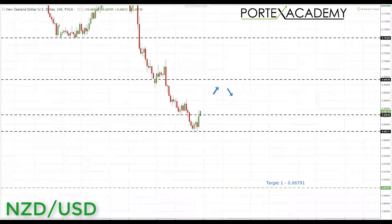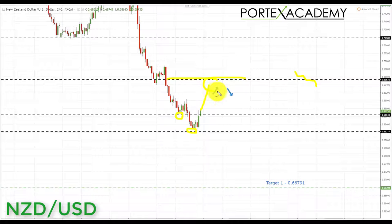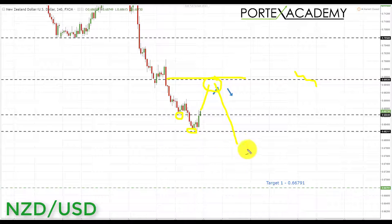The next pair is NZD/USD. Last week we traded into both downside targets at 0.68640 and 0.68217 before bouncing slightly higher into the end of the week. With a pullback expected in the dollar index next week, we could see a run up towards broken support at 0.6953. If we get a retest there acting as resistance, that's a great place to look for bearish formations to short back down to the 0.68217 low, and ultimately to the next key support at 0.66791.